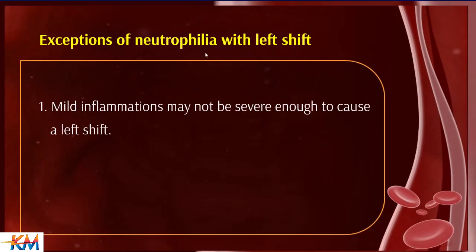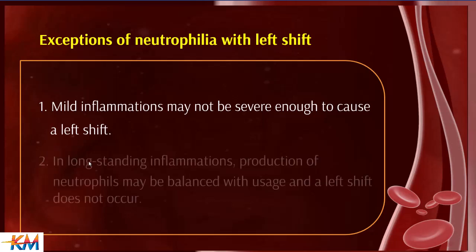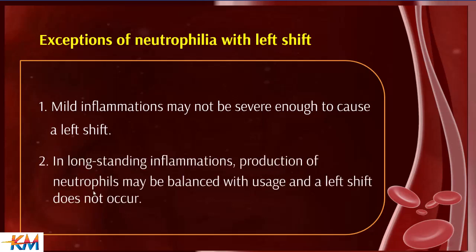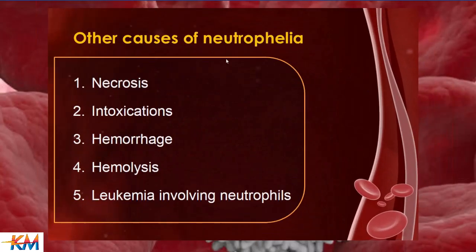There are exceptions to neutrophilia with left shift. Mild inflammation may not be severe enough to cause a left shift, as mature cells from the storage pool are adequate to control it. In long-standing inflammation, production of neutrophils becomes balanced with usage, and left shift does not occur as the bone marrow adapts to demand. Other factors causing neutrophilia include necrosis, intoxication, severe hemorrhage and hemolysis, and leukemia involving neutrophils.